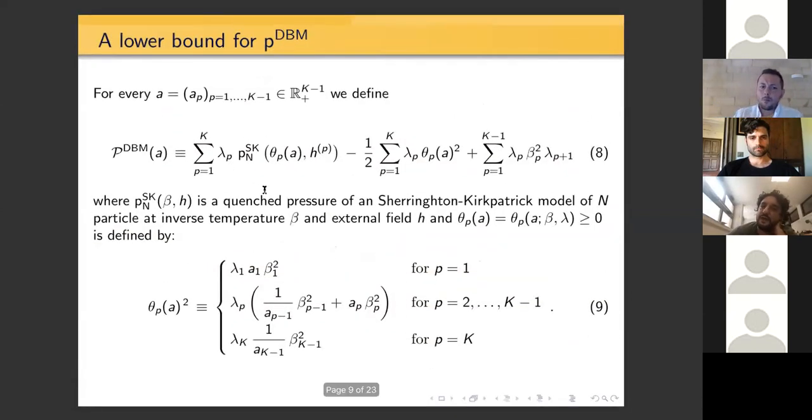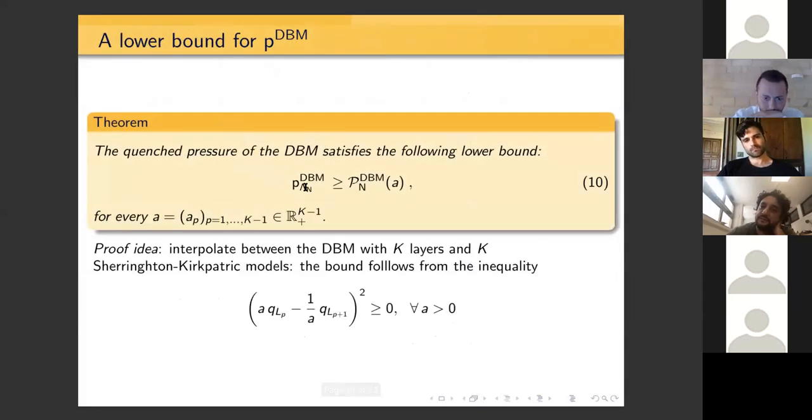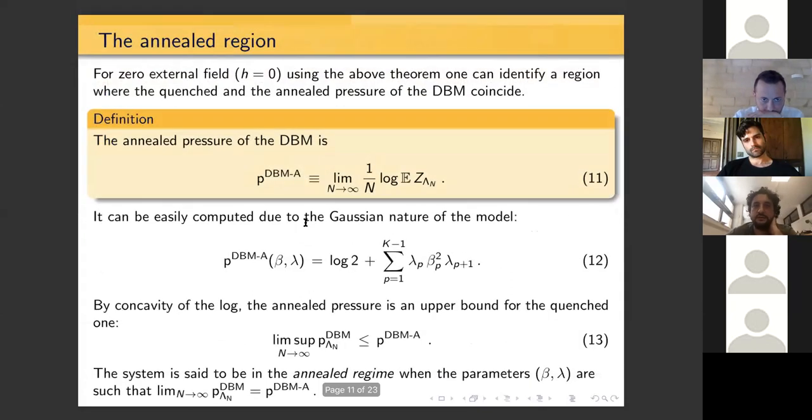In particular, you can choose a to infer something about the pressure of the Boltzmann machine. The first thing that you can do is to completely characterize the annealed region in this way. First, you set the external field equal to zero.